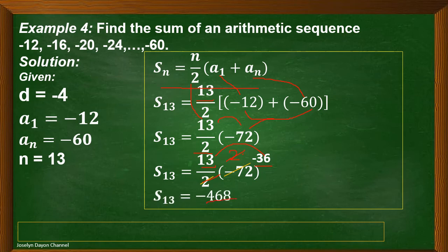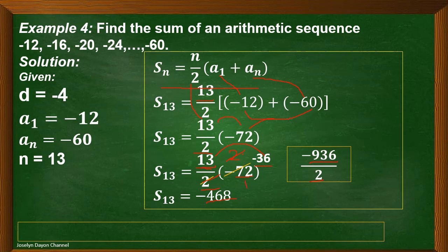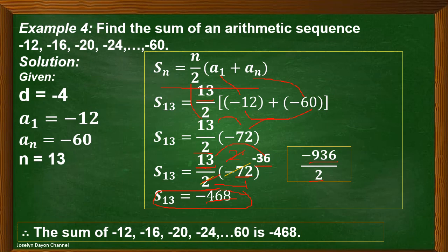What if we don't use that shortcut method? We still get the same answer. Just multiply 13 by negative 72 to get negative 936, keep the denominator 2, and divide: negative 936 divided by 2 equals negative 468. Same answer. So the sum of negative 12, negative 16, up to negative 60 is negative 468.